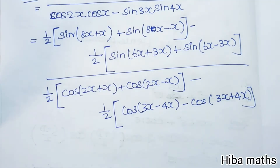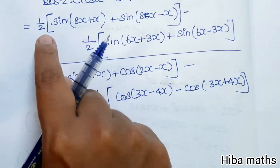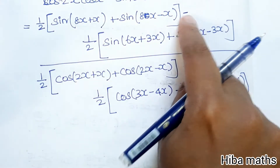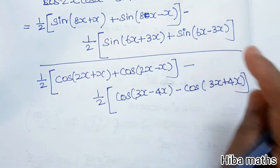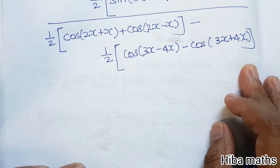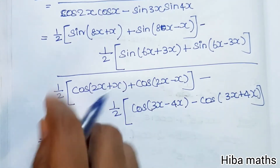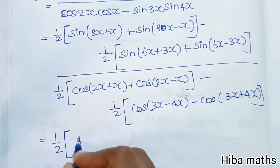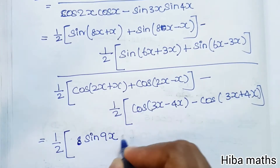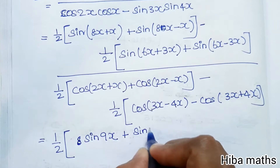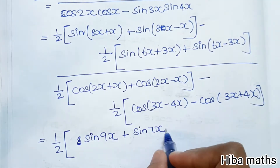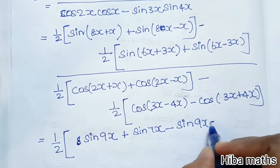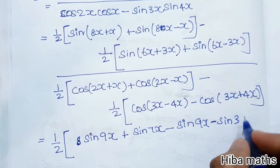Now we combine: 1/2 is common throughout. In the numerator: sin(8x plus x) is sin 9x, plus sin(8x minus x) is sin 7x. Minus sin(6x plus 3x) is sin 9x, minus sin(6x minus 3x) is sin 3x. So combining, we have 1/2 times sin 9x plus sin 7x minus sin 9x minus sin 3x.